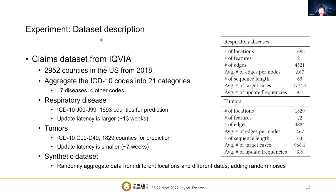We conduct our experiments on the claims dataset collected from IQVIA. This dataset consists of more than 2,000 counties in the United States from 2018. We aggregate the ICD-10 codes in the claims data into 21 categories, including 17 diseases and 4 other codes. We report experiments for two diseases: respiratory disease and tumors. For respiratory disease, updated latency is larger because the number of cases is much larger and data collection takes time. For tumors, the number of cases is fewer so updated latency is smaller, taking about seven weeks to fully collect data. We also release a synthetic dataset where we randomly aggregate data from different locations and dates and add random noise.